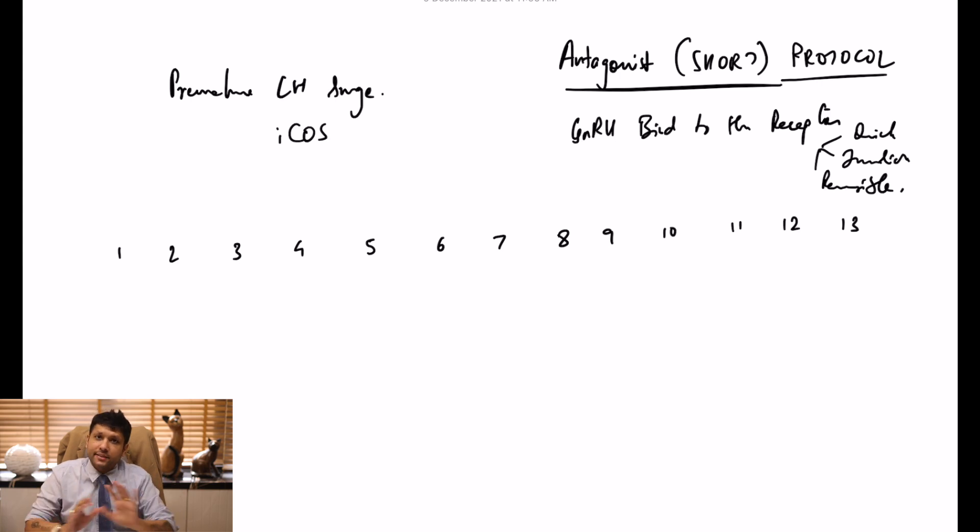This protocol is extremely simple. The patient is called for initial assessment on day one, two, or three of menses. You will look at the antral follicle count, assess estradiol levels if you have the facility, and rule out any cyst formation.